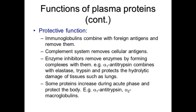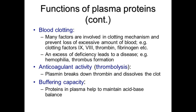Some proteins increase during the acute phase and protect the body — for example, alpha-1 antitrypsin and alpha-2 macroglobulin. Blood clotting: many factors are involved in the clotting mechanism to prevent excessive blood loss — for example, clotting factors 9, 8, thrombin, and fibrinogen; excess or deficiency leads to diseases such as hemophilia or thrombus formation. Anticoagulant activity: plasmin in the plasma breaks down thrombin and dissolves clots. Proteins in plasma also help maintain acid-base balance through buffering capacity. Most plasma proteins are synthesized in the liver.